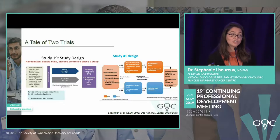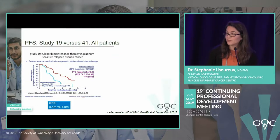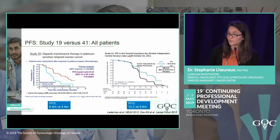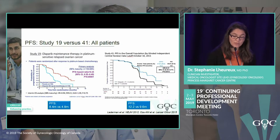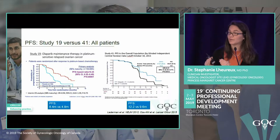Due to hematological toxicity when combining olaparib with chemotherapy, the doses of both olaparib and carboplatin had to be decreased. In Study 19, the PFS improved with olaparib maintenance from 4.8 to 8.4 months. In Study 41, the PFS improvement was seen only at the start of maintenance — not during chemotherapy — likely because of the required dose reductions. These two trials showed olaparib works best as maintenance post-response to chemotherapy.